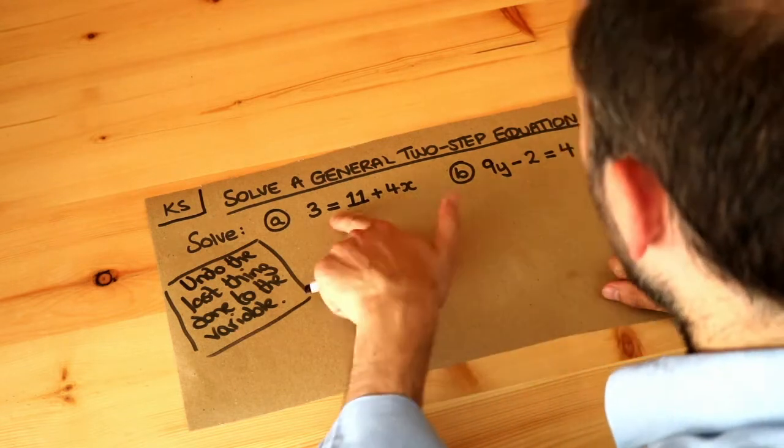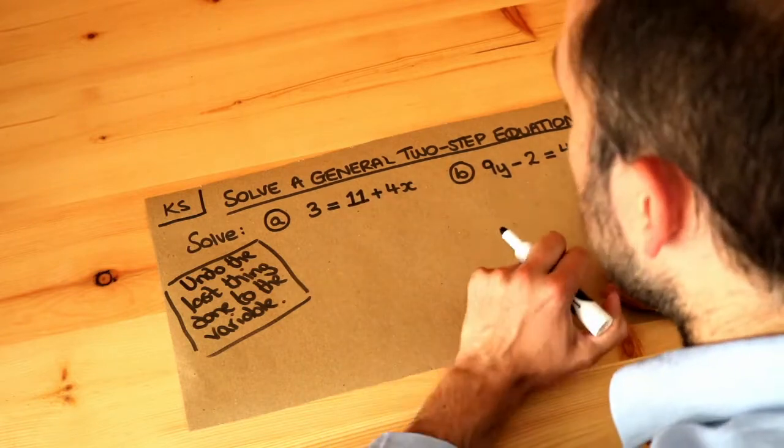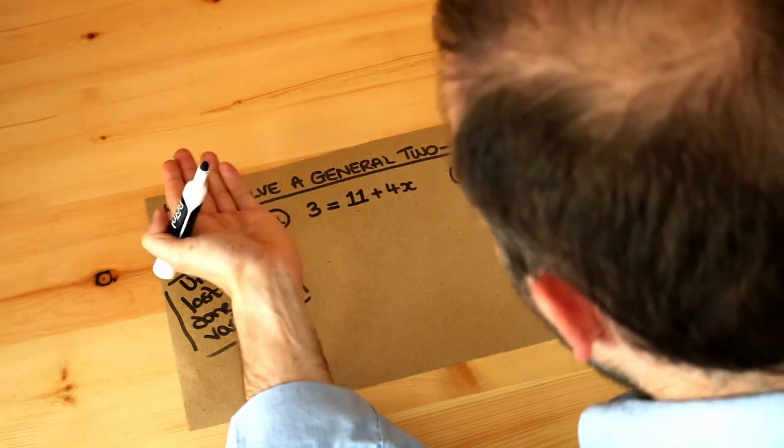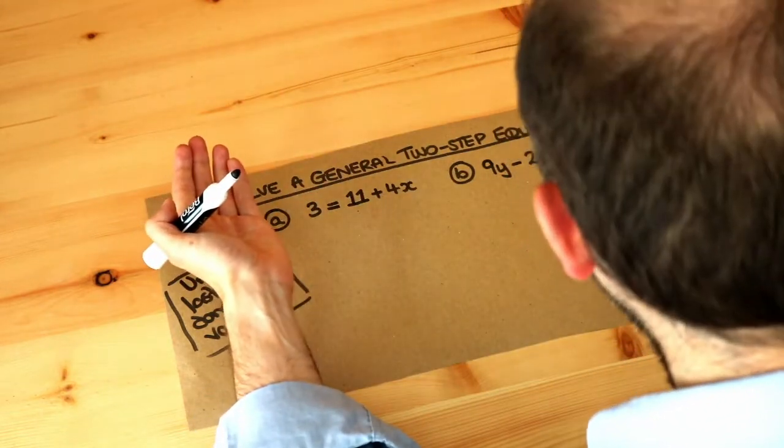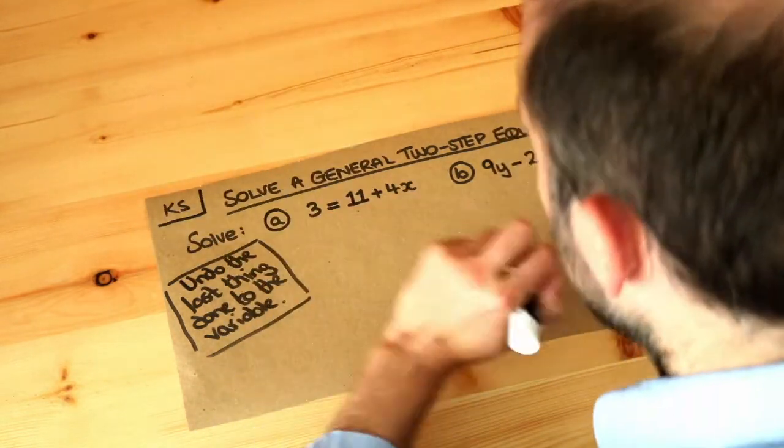Remember also with equations like this, these equations because they have equals in them, it's a balancing act. So whatever we do to one side of the equation we have to do the same for the other. So if we add 3 to one side of the equation we have to add 3 to the other side to keep it balanced.